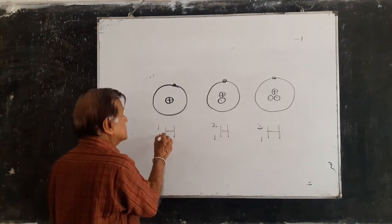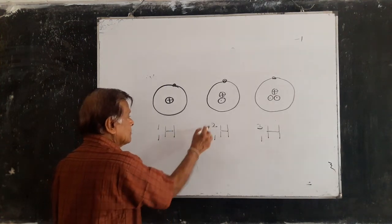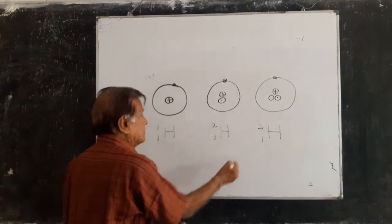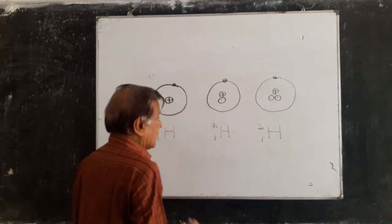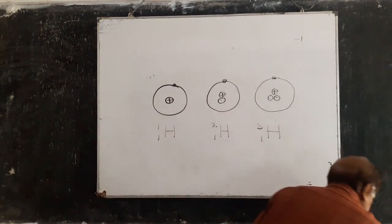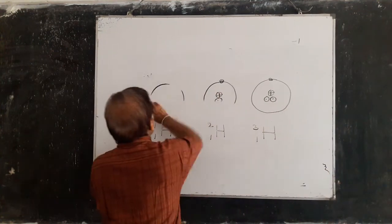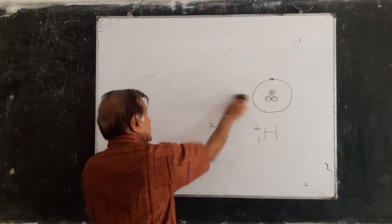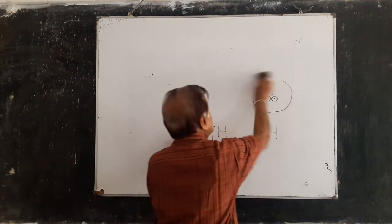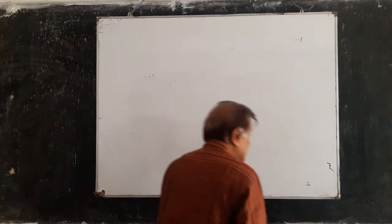These different types of atoms are the isotopes of hydrogen. The first is protium, the second is deuterium, and the third is tritium. Now let's take another example — carbon.